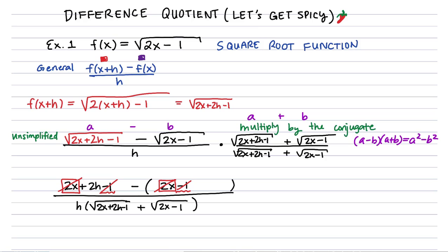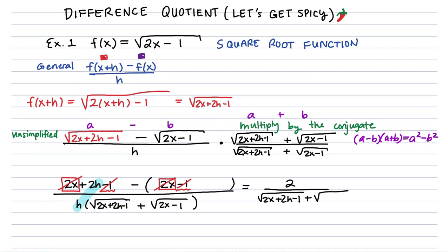And if you look, see how there's that factor of h top and bottom? So I have a factor of h in the numerator and denominator, they cancel, leaving me with 2 in the numerator and the conjugate in the denominator.